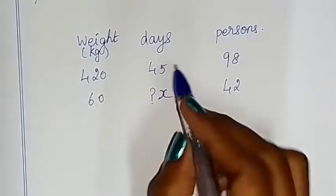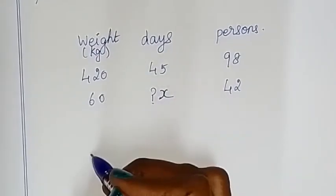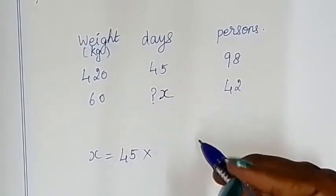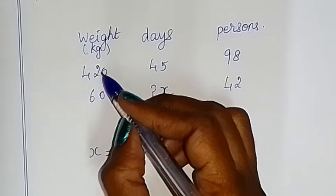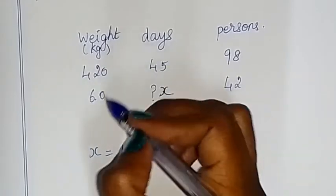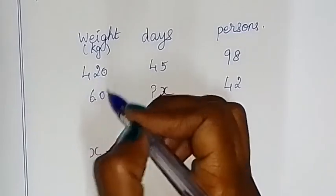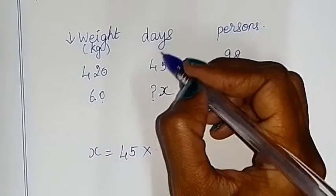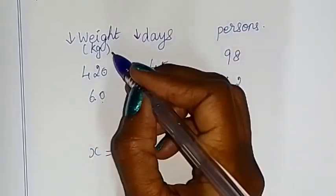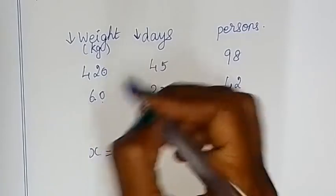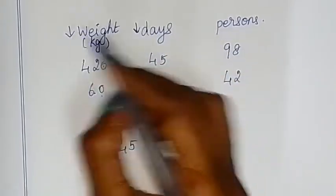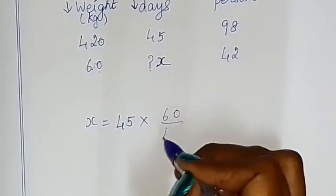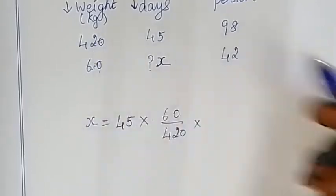Check direct proportion and inverse proportion. x is the value, starting from 45, using the multiplying factor. Weight of rice is small — small rice means small days, so this is direct proportion. At 420 at the time.